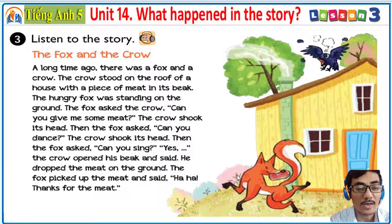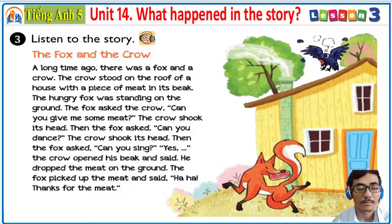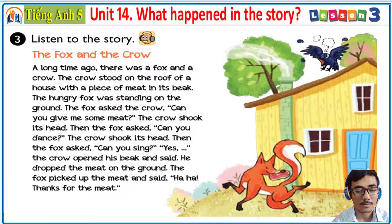Now, we move on to Activity number 3. Let's have a look here: The Fox and the Crow. Now, you look at your book and listen to the story. A long time ago, there was a fox and a crow. The crow stood on the roof of a house with a piece of meat in its beak. The hungry fox was standing on the ground. The fox asked the crow, 'Can you give me some meat?' The crow shook its head. Then the fox asked, 'Can you dance?' The crow shook its head. Then the fox asked, 'Can you sing?' Yes — the crow opened his beak and sang. He dropped the meat on the ground. The fox picked up the meat and said, 'Haha, thanks for the meat.'